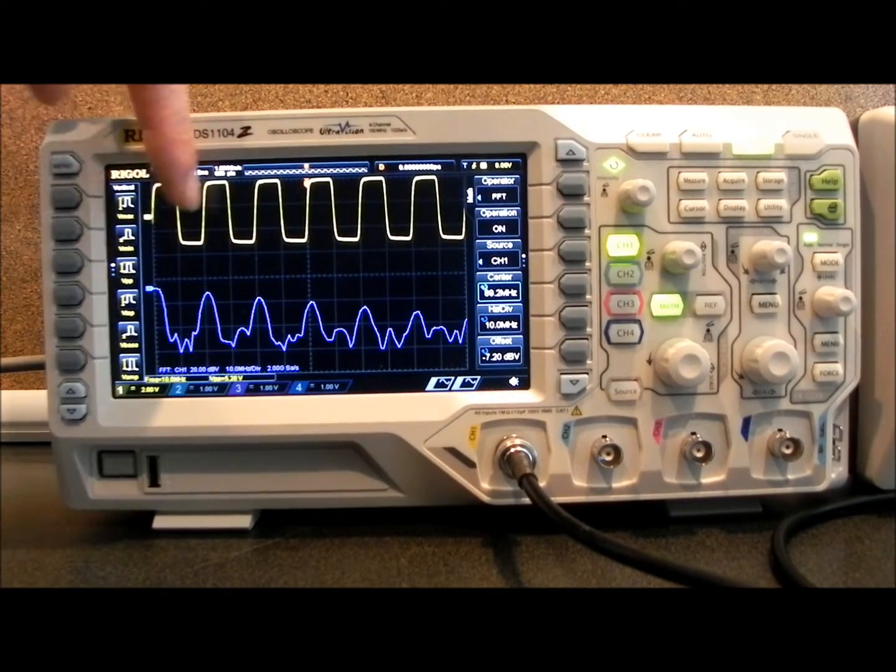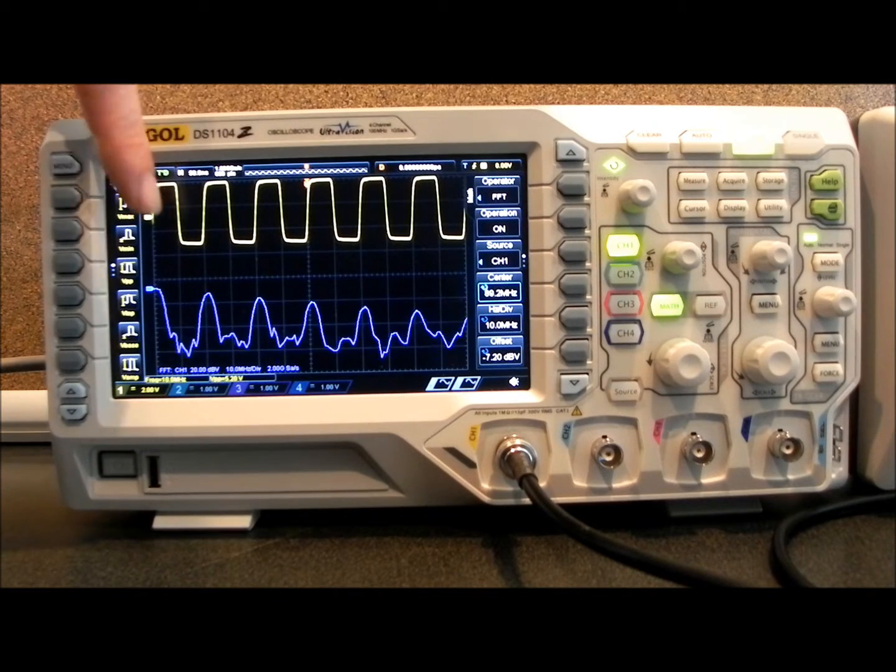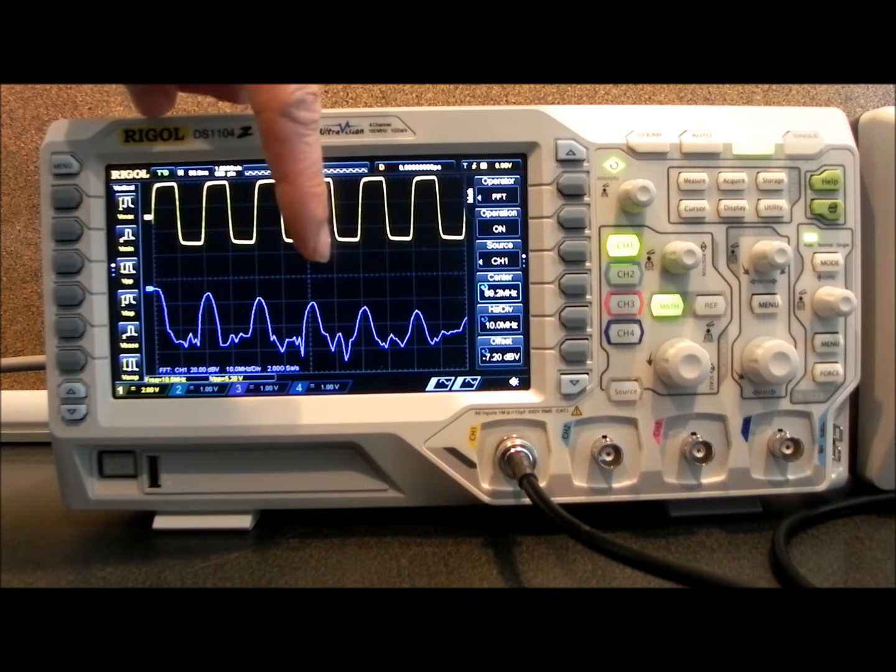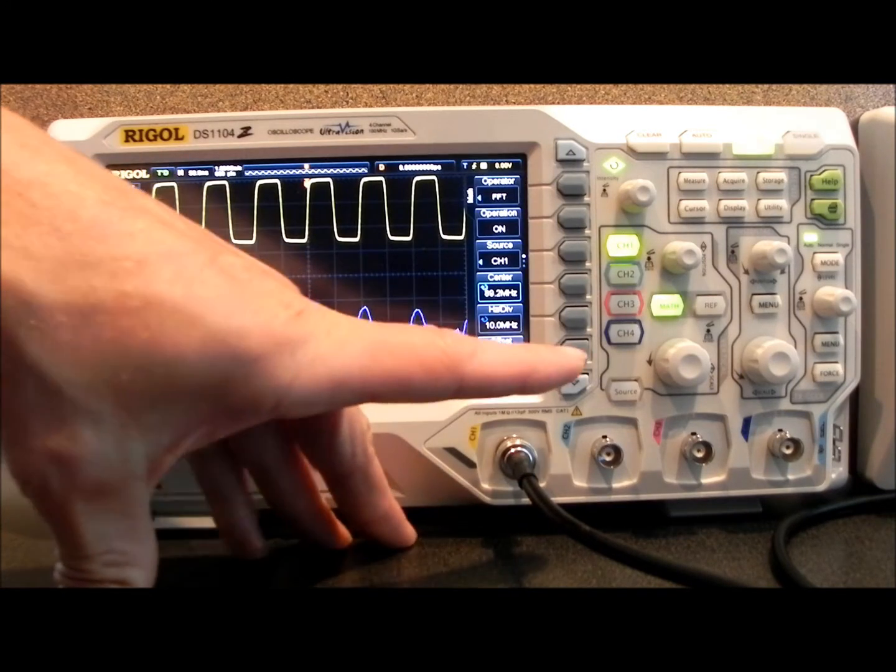And you'll see now we've got an FFT, Fast Fourier Transform breakdown of this 10 MHz signal. We see all of the odd harmonics here, and we can adjust the horizontal division as well as the offset.